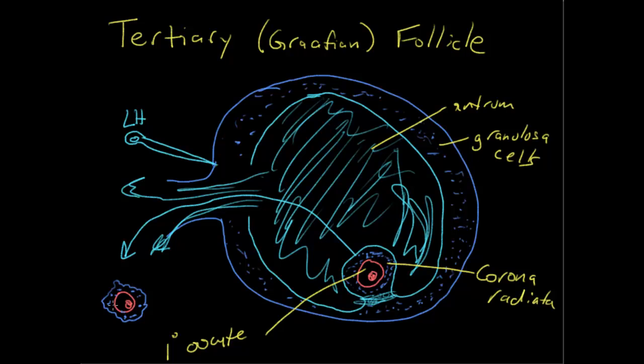So, it's the Graafian follicle that actually ruptures and allows the oocyte and its corona radiata to be liberated from the ovary. So, that's it. So, just to recap.